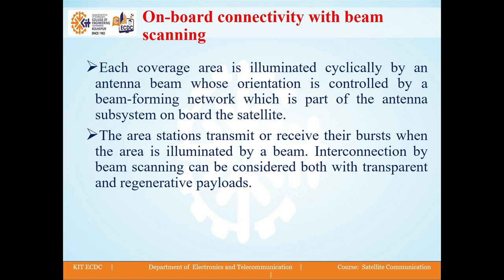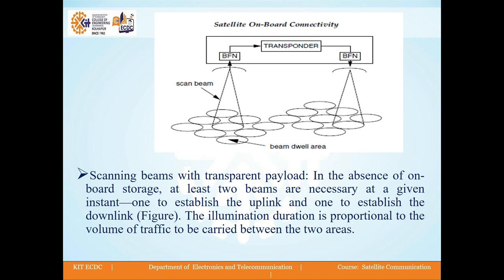The next method is onboard connectivity with beam scanning. Here, each coverage area is illuminated cyclically by an antenna beam whose orientation is controlled by a beam forming network, which is part of the antenna subsystem onboard the satellite. The area stations transmit or receive their bursts when the area is illuminated by a beam. Interconnection by beam scanning can be considered both with transparent and regenerative payloads. There are two methods: scanning beam with transparent payload, and scanning beams with regenerative payload.